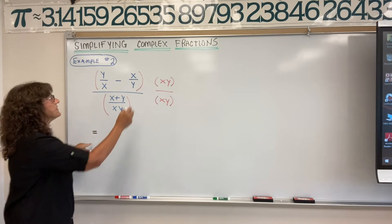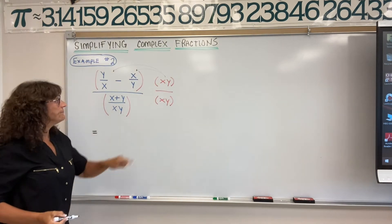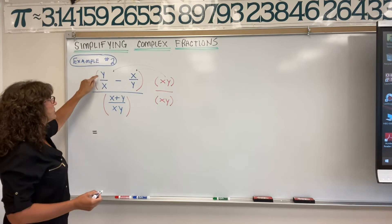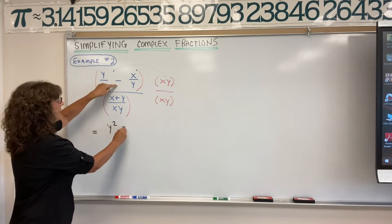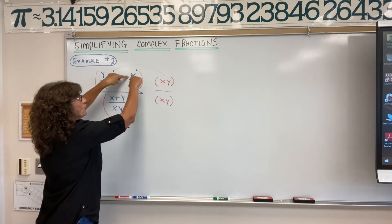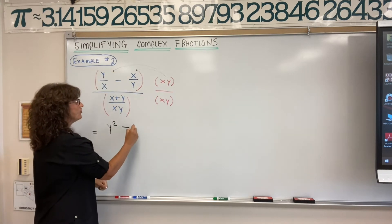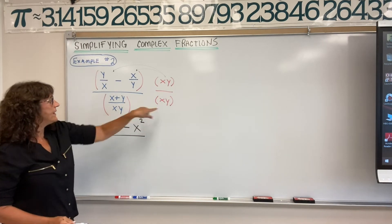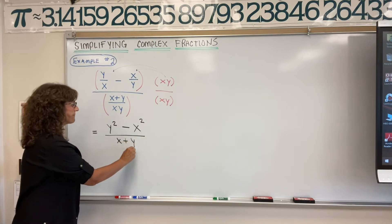We have to distribute. When you take the xy and multiply it by y over x, the x's cancel — you get y squared. Bring down the operation sign. Then take the xy and distribute it to the next term: x squared times y over y — the y's cancel, so you end up with x squared. What about the denominator? When you multiply xy by the xy in the denominator, the xy cancels, so you have x plus y.